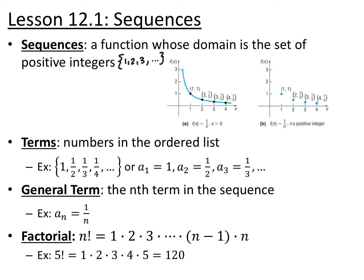Each value in the sequence is called a term. We usually write them in numbered order. So this would be the first term, second term, so on and so forth. We use these curly brackets to represent sequences or terms in a sequence, and then we also use this sequence notation. So instead of using function notation, we use this subscript notation. So a sub 1 would be equivalent to saying f of 1.